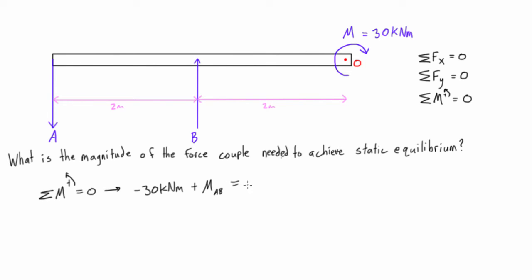And this must equal zero. So that's saying that the moment caused by the force couple A, B, if we just rearrange this, it has to equal 30 kilonewton meters.